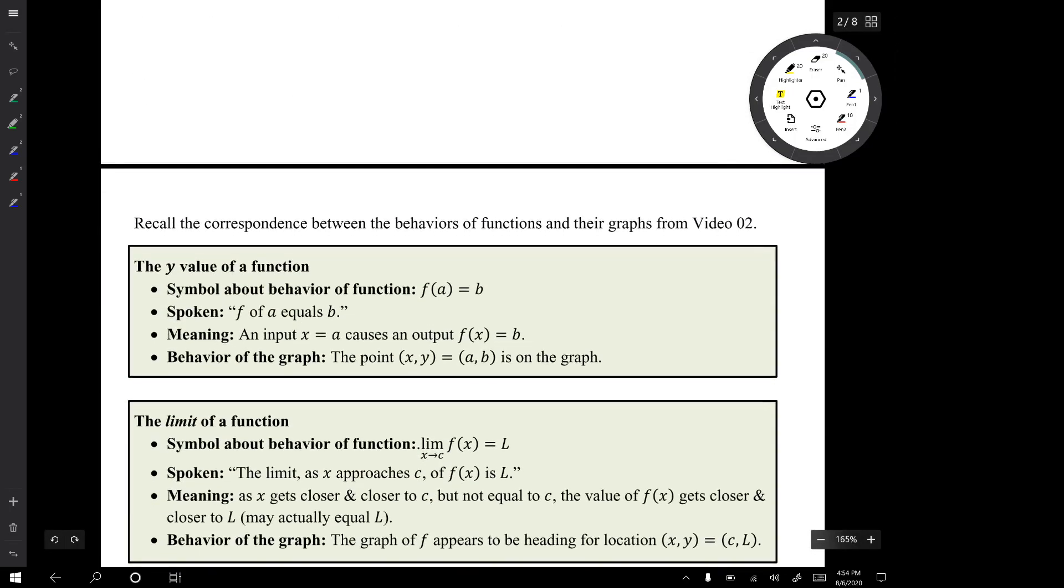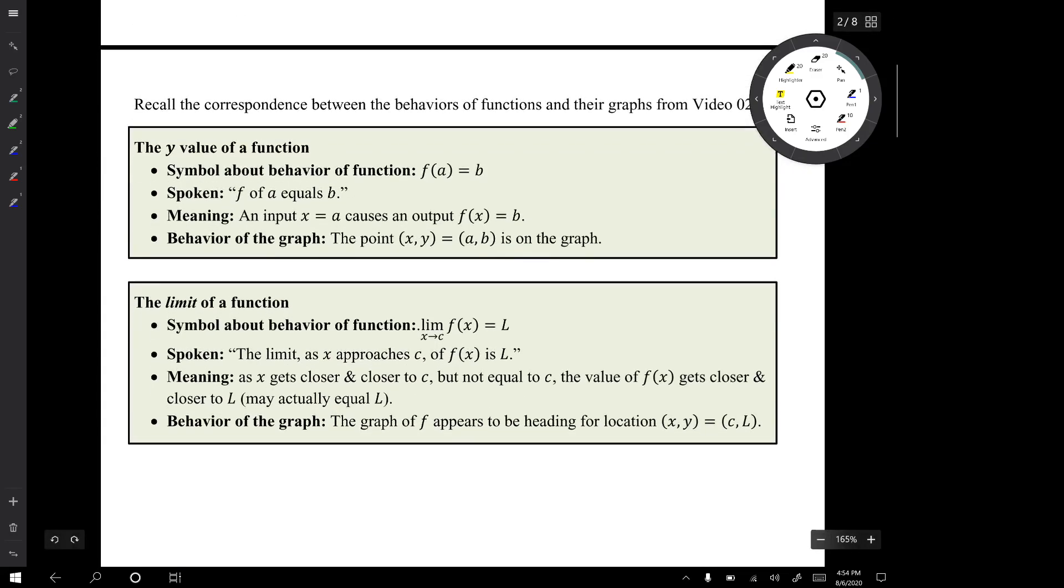Now let's recall what we know about the correspondence between behaviors of functions and their graphs from video 2. We have the idea of the y value of a function and that has to do with this symbol f(a) that tells you about the y value on the graph when x equals a. So if there's a point (a, b) on the graph that means that f(a) equals b. That means that when a is an input, b is the resulting y value output.